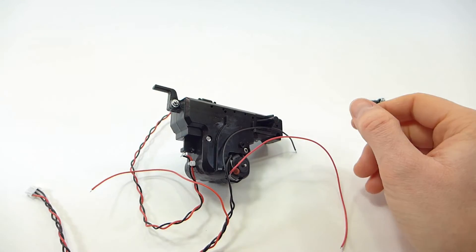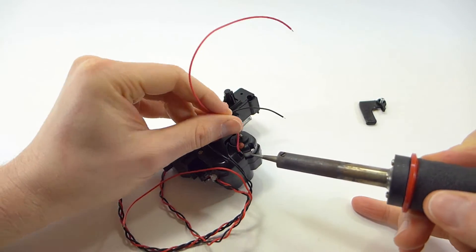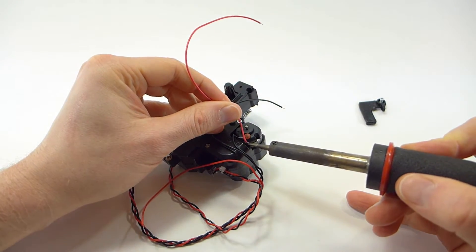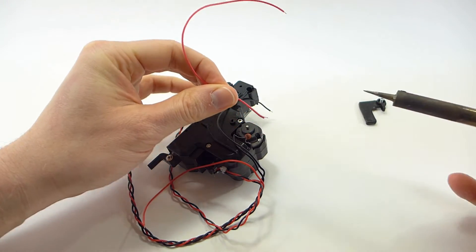Next we're going to unsolder this short red wire that is attached to the motor positive terminal, and we're not going to need this wire so you can throw it away.